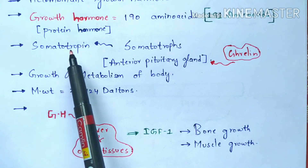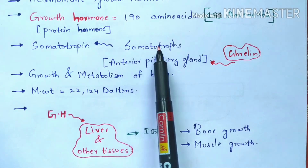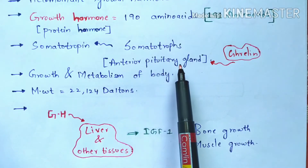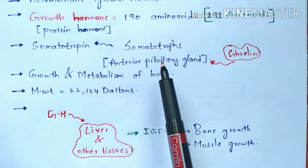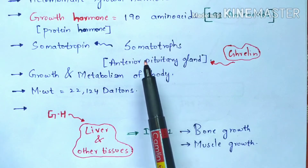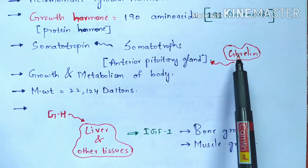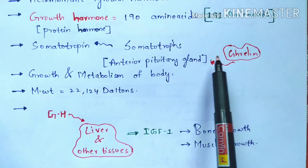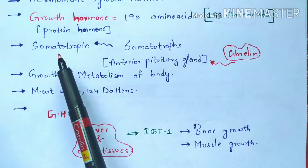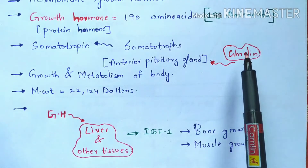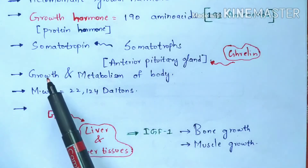This growth hormone is also named somatotropin because it is secreted from the somatotrophs, which are present in the anterior pituitary gland. The growth hormone is produced from this anterior pituitary gland using a hormone called ghrelin. Ghrelin is a peptide hormone produced from the stomach, and it sends signals to the anterior pituitary gland to secrete somatotropin. Ghrelin plays a major and vital role in the production of somatotropin.